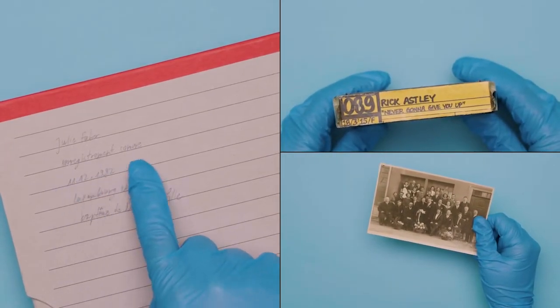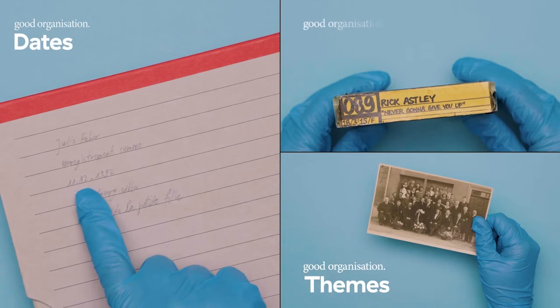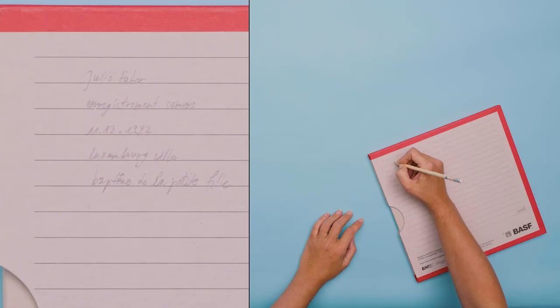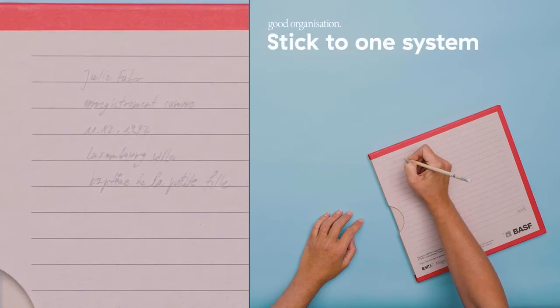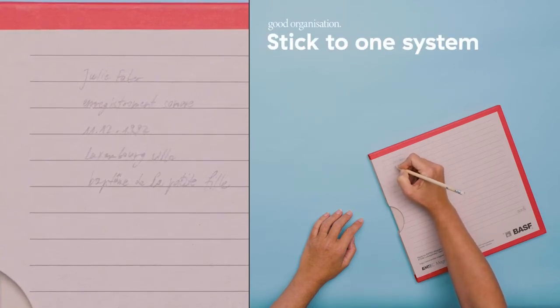For example, you can sort them according to dates, themes or even titles if they exist. It is up to you. Just make sure to stick to one system. That way, you will always be able to find what you are looking for.